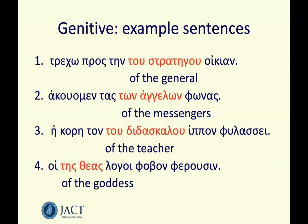Number three: 'hē korē tou tou didaskalou hippon phulassei'. 'Hē korē' — the girl — 'phulassei' — guards. 'Ton hippon' — the horse — whose horse? 'Tou didaskalou'. The girl guards the horse of the teacher: 'ton tou didaskalou hippon' in our genitive sandwich. And finally: 'hoi tēs theas logoi phobon pherousin'. 'Hoi logoi' — the words — of the goddess, 'tēs theas' — bring, 'pherousin', fear, 'phobon'. The words of the goddess bring fear. Hopefully you spotted the genitive in each of those situations and saw the sandwich construction working each time.